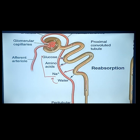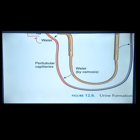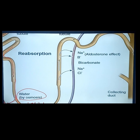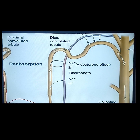Whatever is left continues down to the loop of Henle. The primary function of the loop of Henle is water absorption by osmosis. The peritubular capillaries contain higher osmolarity, which pulls water from the loop of Henle into the blood vessel. Whatever is left then continues into the distal tubules where continuous reabsorption takes place, including the reabsorption of sodium — the aldosterone effect.